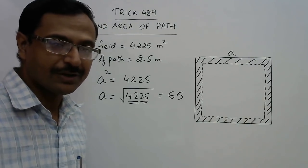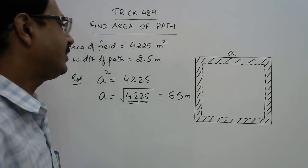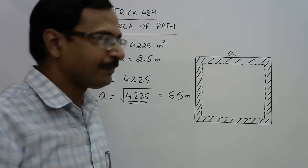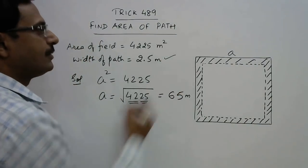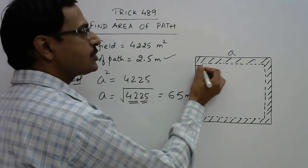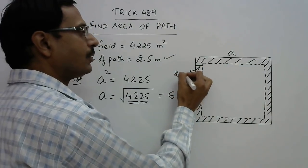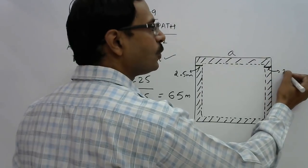That is it, 65 is the square root of 4225. Very amazing shortcut for finding the square roots. So now we have the outer side of the plot. This is 65 meters, and now use the width. See, width is this side also, this is 2.5, and width is this side also, this is also 2.5.